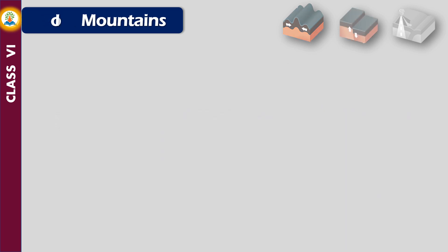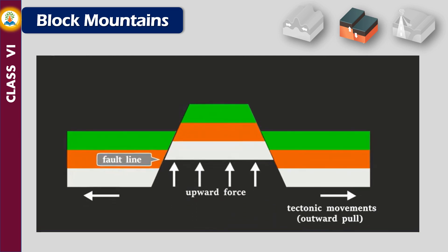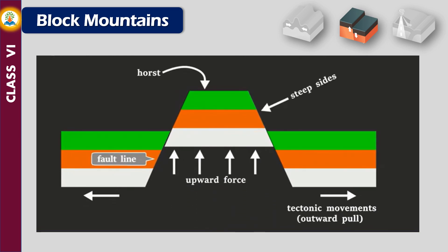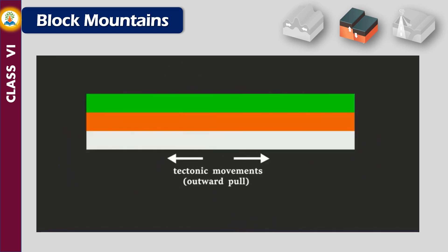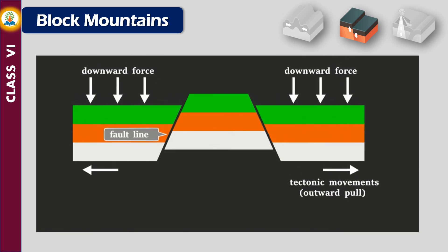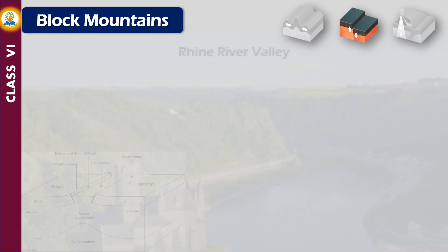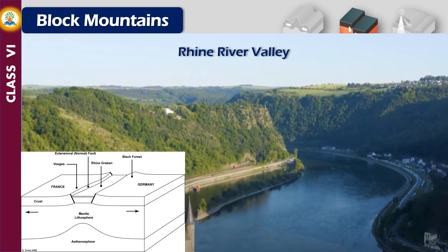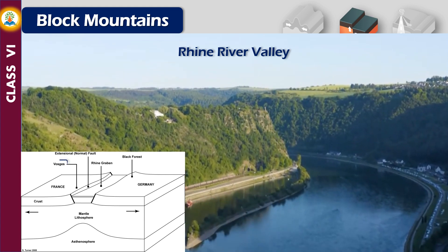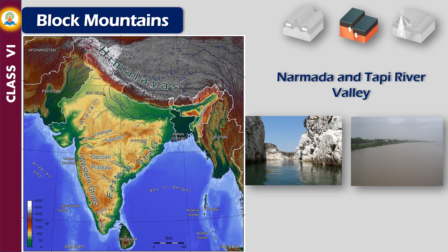Sometimes, due to forces of tension, cracks or faults occur in the Earth's crust and horizontal layers of rocks break into several blocks. These blocks either get uplifted or subside — the uplifted blocks are called block mountains or horsts. The Rhine River valley is an example of a rift valley enclosed by two block mountains, the Vosges and the Black Forest. In India, the Vindhya and Satpura are two block mountains, with the Narmada and Tapti river valleys running between them.